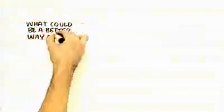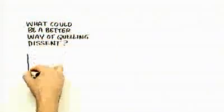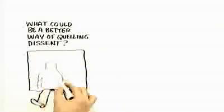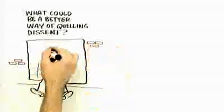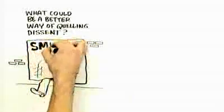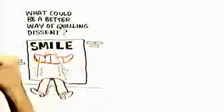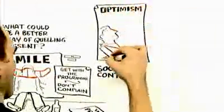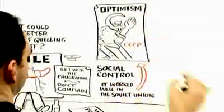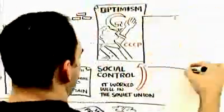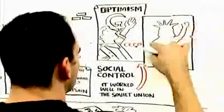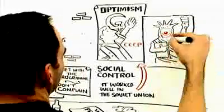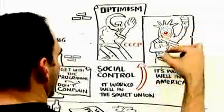What could be cleverer as a way of quelling dissent than to tell people who are in some kind of trouble, poverty, unemployment, et cetera, that it's all their attitude. That that's all that has to change. That they should just get with the program, smile and get no complaining. I mean, it's a brilliant form of social control, which, by the way, was practiced in the Soviet Union. I mean, one of the principles of Soviet communism was optimism. So it's a form of social control that has been widespread in totalitarian types of societies. But I think it has worked very well in America.